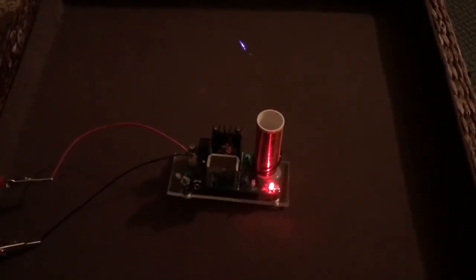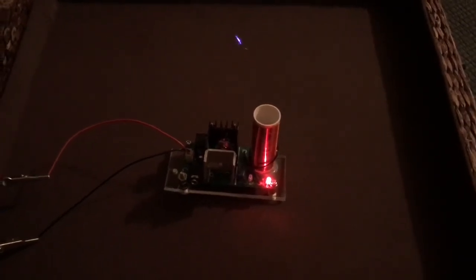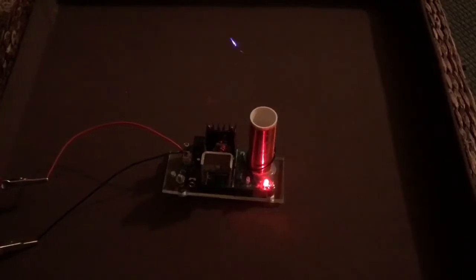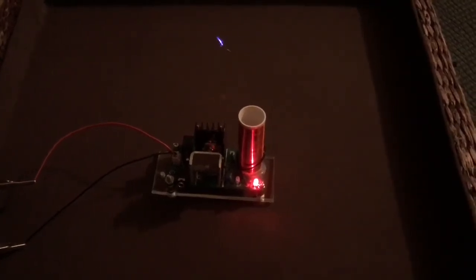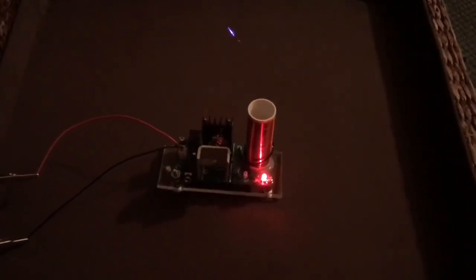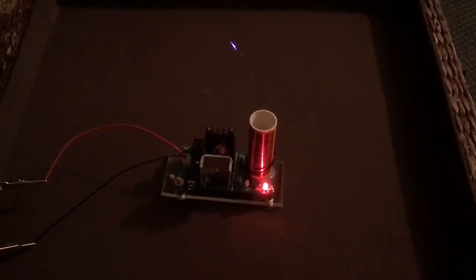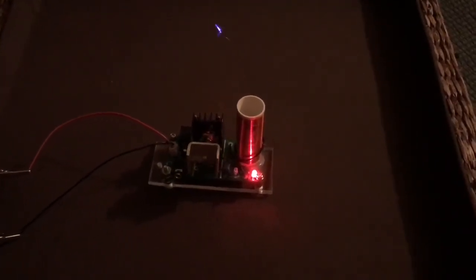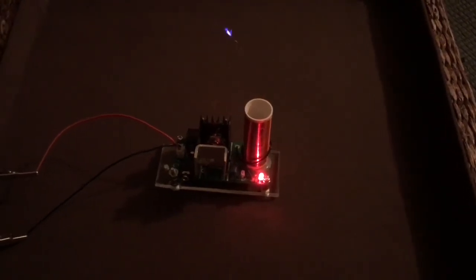But easily able to improvise by making some of the components that were missing, like adding a screw, adding a heatsink. So all in all, I think a good start if you're interested in Tesla coils and electronics, and a great project. Thanks for watching. Please don't forget to subscribe if you like these videos.